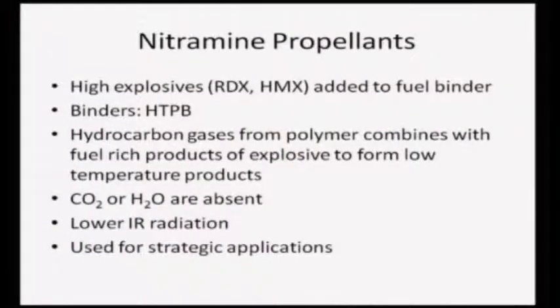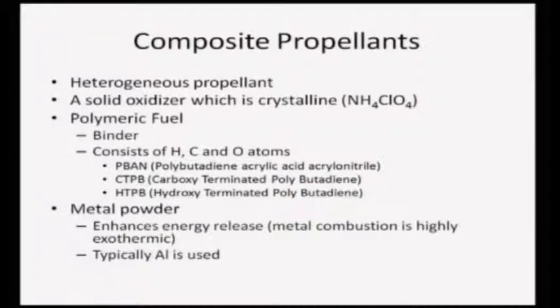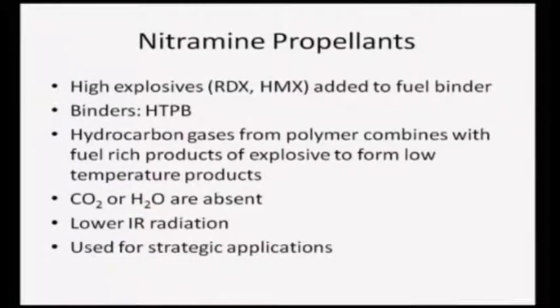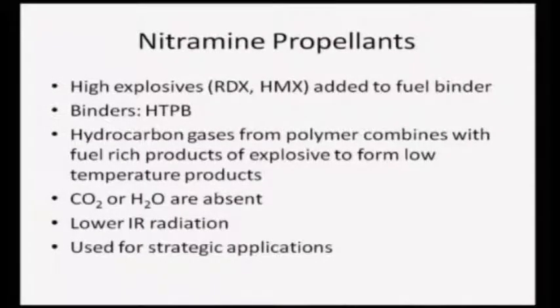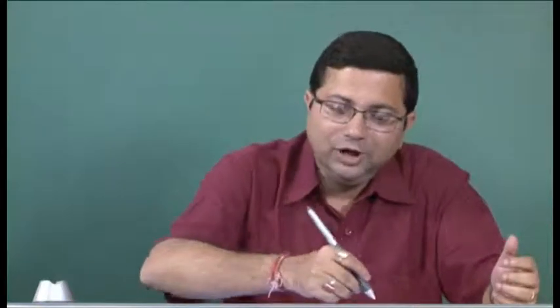The fourth type is nitramine propellant. These contain high explosives like RDX or HMX added to a fuel binder - typically HTPB (hydroxy terminated polybutadiene). RDX or HMX are added to this binder, making it more dangerous to handle, but if burned in a controlled manner they provide much higher energy density. The hydrocarbon gases from the polymer combine with the fuel-rich products of explosives to form lower temperature products. The binder damps out the explosiveness and gives controlled burning.